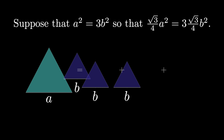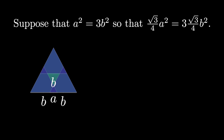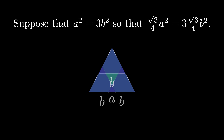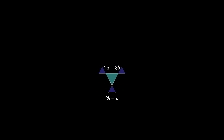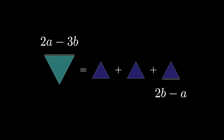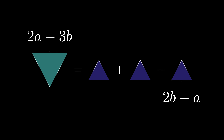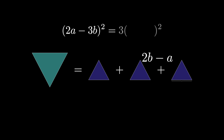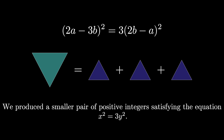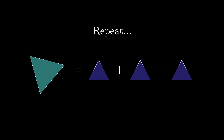Using the large equilateral triangle as the room and the three small equilateral triangles as the carpets, we see that there is some overlap and uncovered space. The triangles that overlap have a side length of 2b minus a, and the uncovered region is an equilateral triangle with side length 2a minus 3b. By the carpets theorem, these areas are equal, so (2a minus 3b) squared equals 3 times (2b minus a) squared. We again produced a smaller pair of positive integers satisfying x squared equals 3y squared, and we can repeat this process over and over again.